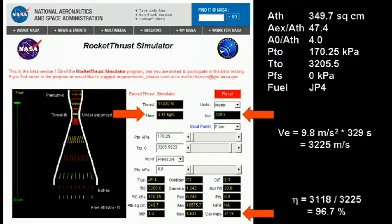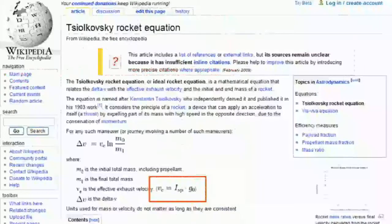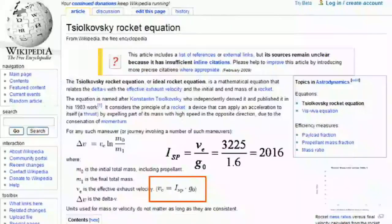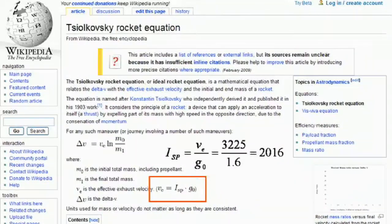Anyway, this is obviously how Gilliam got his numbers. To prove these numbers don't work on the moon, let's return to Wikipedia and calculate the specific impulse for an effective velocity of 3,225 m per second, if G0 is 1.6 m per second squared. We get 2,016 seconds, which is way too high for a chemical rocket engine.